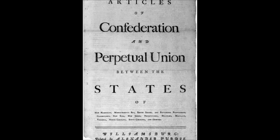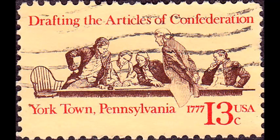If you think about it, we were breaking away from a country that we felt was very overbearing and oppressive. So we're going to try to go in the complete opposite direction and create a national government that really has little to no power over us, especially when it comes to money issues. That's the Articles of Confederation.